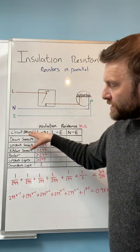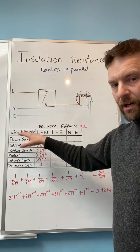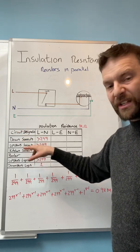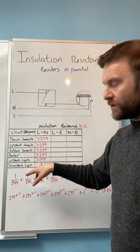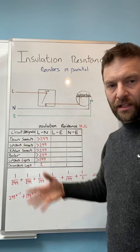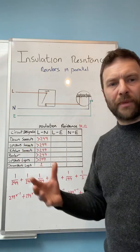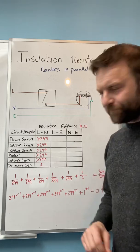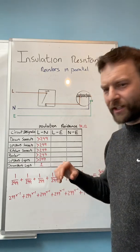So in this circuit designations I've got down sockets, upstairs sockets, kitchen sockets, boiler, upstairs lights, downstairs lights. So there's six circuits there, it's a pretty standard basic house, maybe two up two down something along those lines.